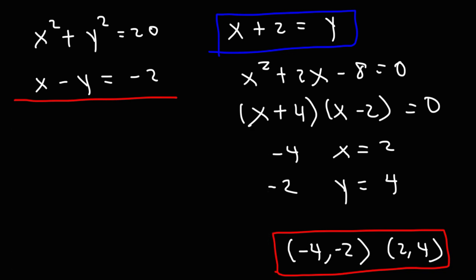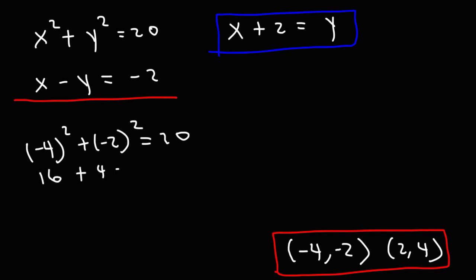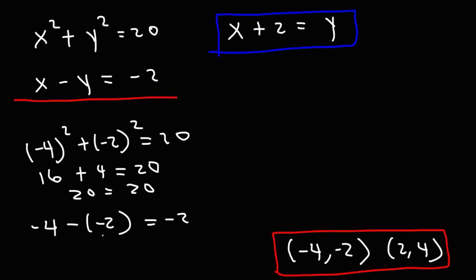Let's verify both solutions in the original equations. For the first: negative 4 squared plus negative 2 squared equals 16 plus 4 equals 20. Checking the second equation: negative 4 minus negative 2 equals negative 4 plus 2 equals negative 2. So the first solution is correct.